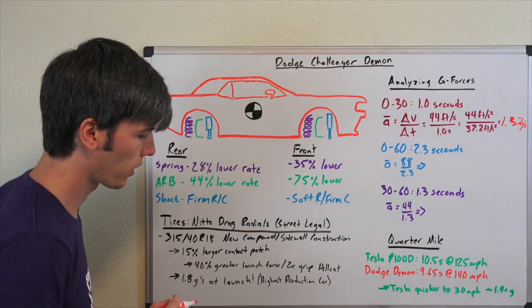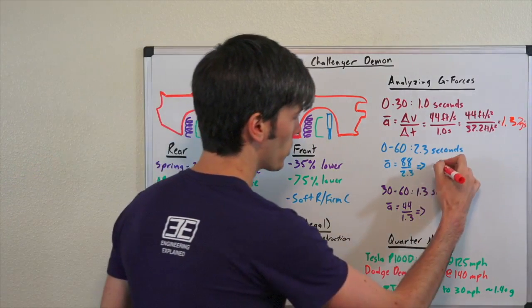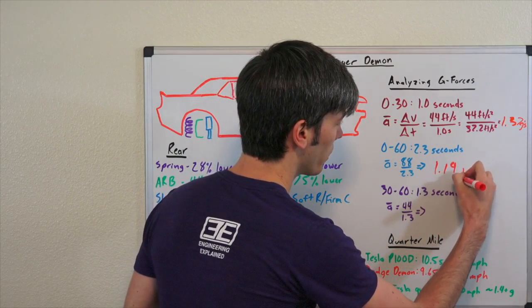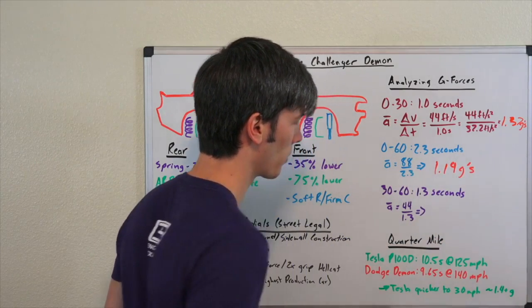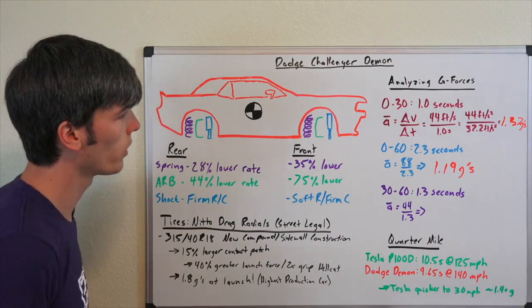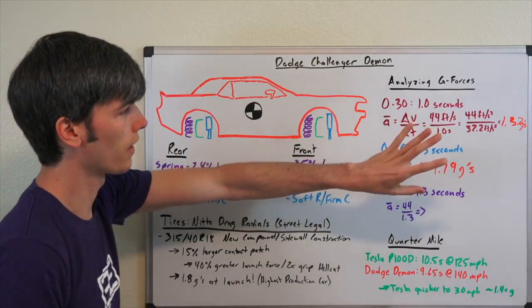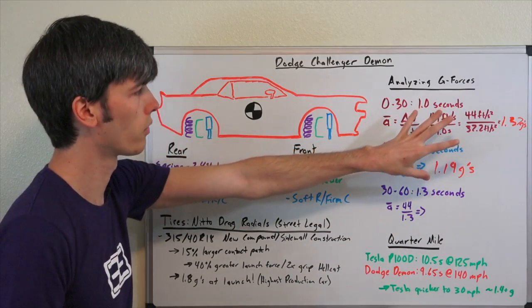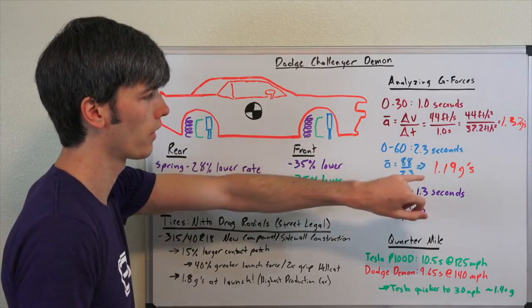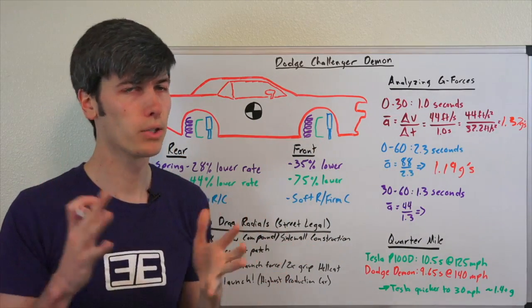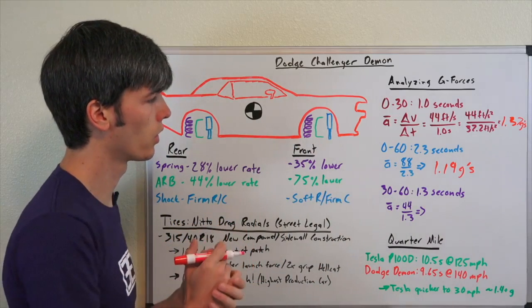0 to 60, 2.3 seconds, that is equal to 1.19 G's when we do the math as far as acceleration. Remember they're saying a peak of 1.8. Here's the thing, this is excluding one foot of rollout, so it's actually going to be a little bit longer than that. So how do we measure the amount of time it took?